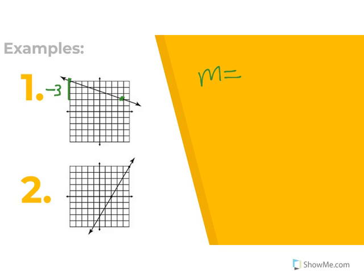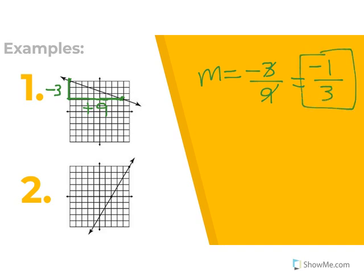Now I'm going to go over to the right. Going right is positive, so: 1, 2, 3, 4, 5, 6, 7, 8, 9. Let me double-check: 1, 2, 3, 4, 5, 6, 7, 8, 9 — yes. So my rise was negative 3 over 9. We have a number in common: 3 goes into 3 one time, and 3 goes into 9 three times. So your slope for this one is m equals negative 1 third.